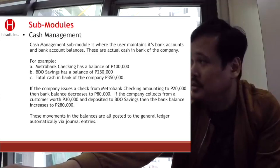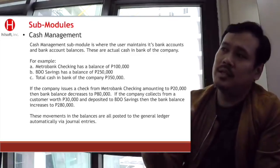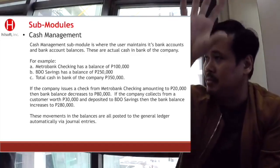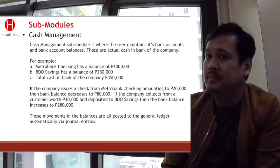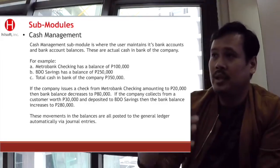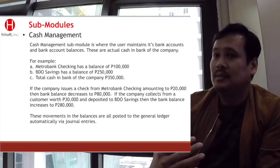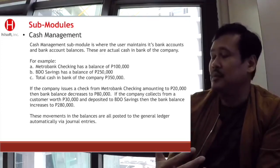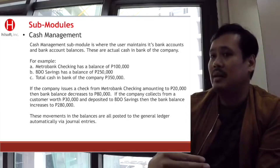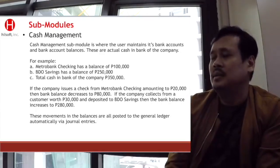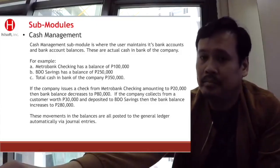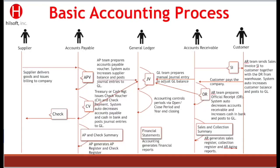Each bank account is a subsidiary ledger of your cash-in-bank in your general ledger. So when you deposit money, the balance in that bank increases. If you issue a check, the check balance increases. That's the basic accounting process.